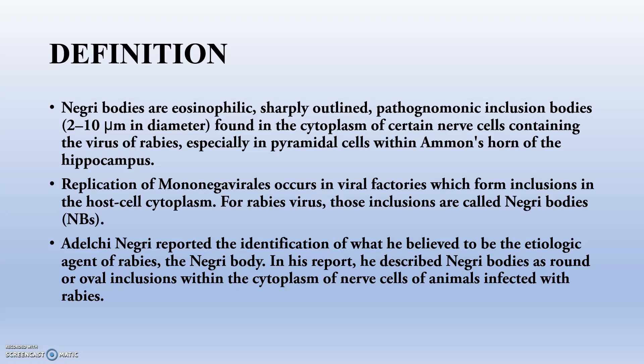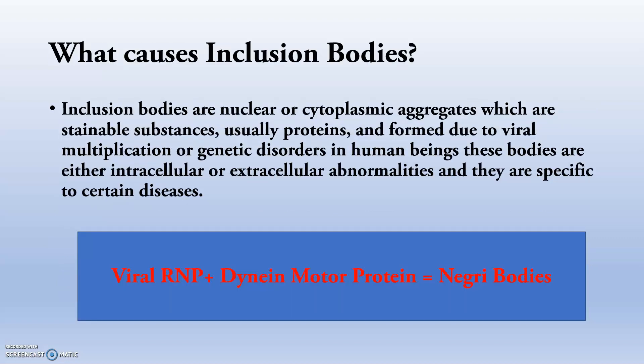Adelchi Negri reported the identification of what he believed to be the etiologic agent of rabies in the Negri bodies. He was the first person who studied and made a hypothesis on these Negri bodies and rabies, and we have given the name 'Negri bodies' from his name. The composition is: viral ribonucleoprotein plus dynein motor protein of the pyramidal cells of Ammon's horn of the hippocampus — whenever they fuse, they will be producing Negri bodies.